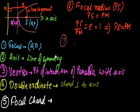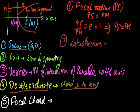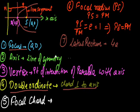The seventh thing is the latus rectum. It is a double ordinate passing through the focus — in other words, it is a focal chord perpendicular to the axis. The length of the latus rectum is 4a. The semi-latus rectum is half of the latus rectum, so its length is 2a. We will see how these values are derived later on.